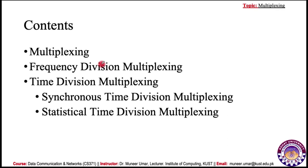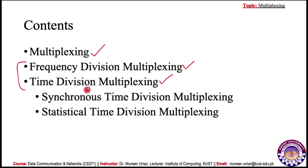These are the contents for today's lecture. First we will study the basic concept of multiplexing. Then we have two major types: frequency division multiplexing, used for analog signals, and time division multiplexing, used for digital signals. In TDM we have two types: synchronous time division multiplexing and statistical time division multiplexing. We will look into all these with example questions and their solutions.